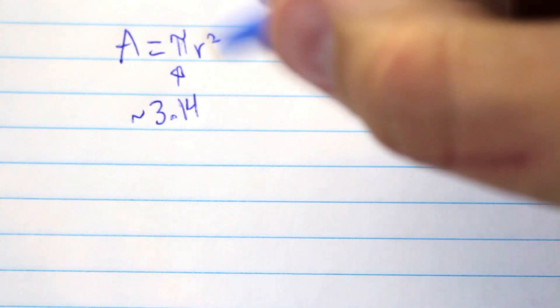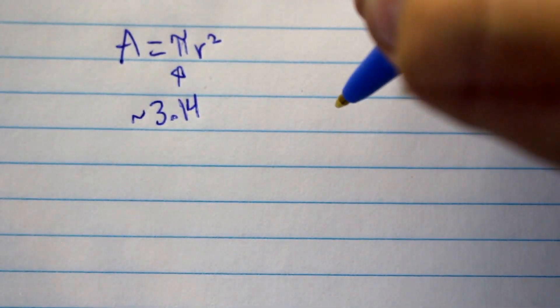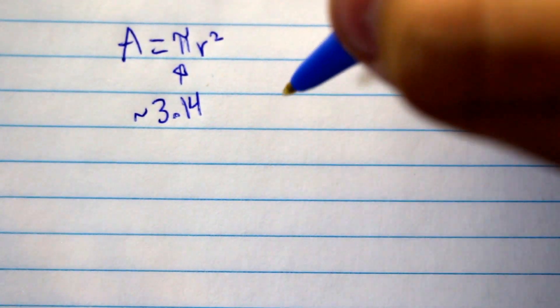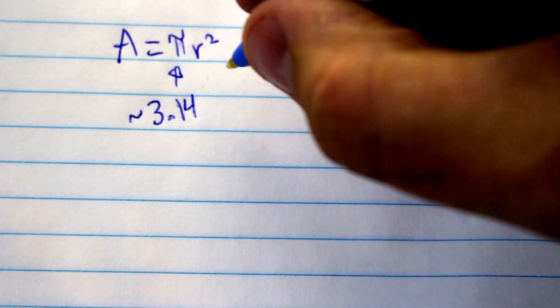Okay, pi, this number here, is a constant. It stands for the number 3.14. But this number, this is the approximation. If you write the whole number out, it goes on forever, so you can't write the whole number out. But 3.14 works for most of your calculations unless your teacher or professor says otherwise.